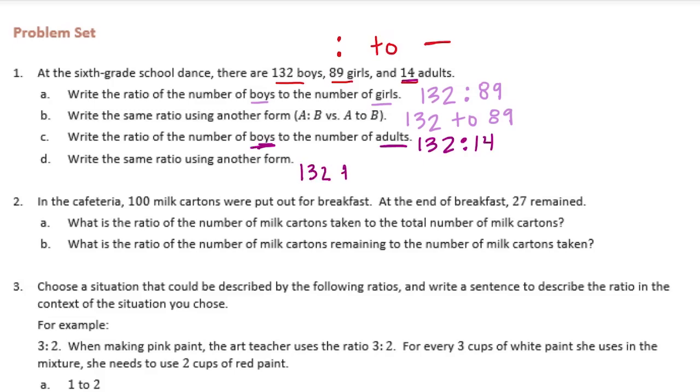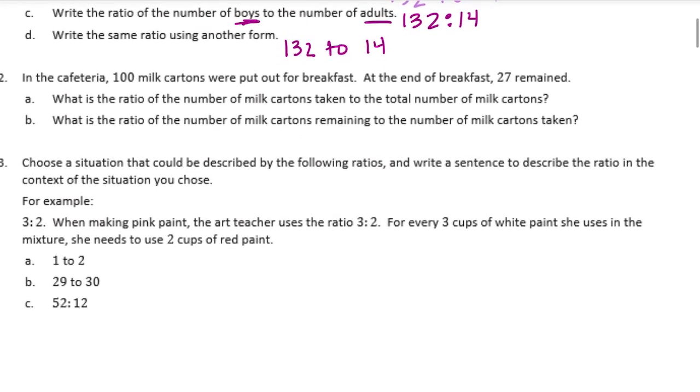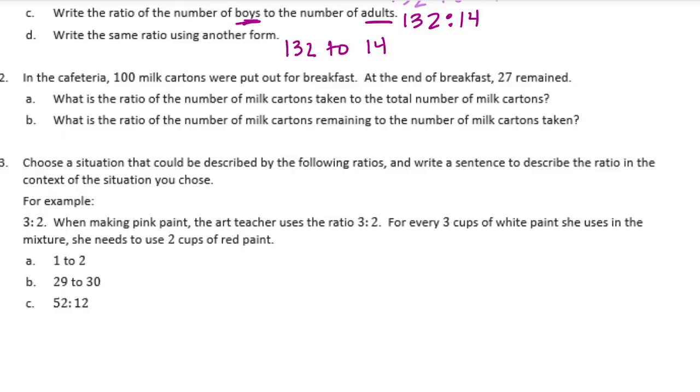Number two: in the cafeteria, 100 milk cartons were put out for breakfast. At the end of breakfast, 27 remained. What is the ratio of the number of milk cartons taken to the number of milk cartons? So we're looking for the number first, we're looking for the number of milk cartons taken. So we know there were 100 milk cartons put out at breakfast, 27 remain, so we actually don't know how many are taken. We need to do a little investigating to figure that piece out.